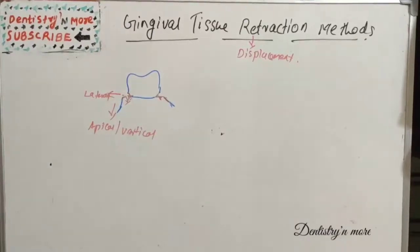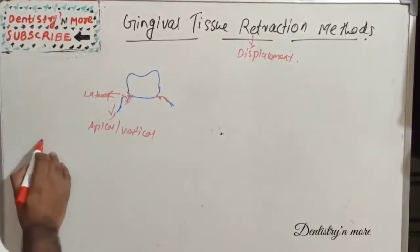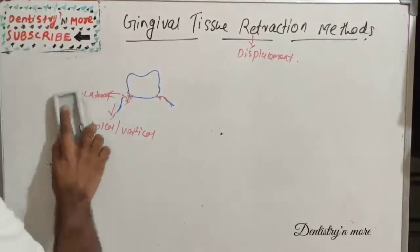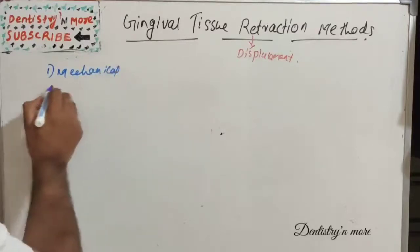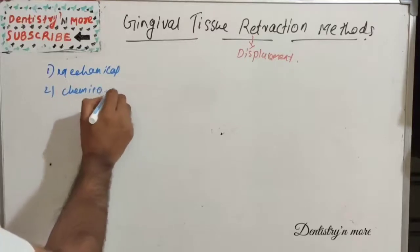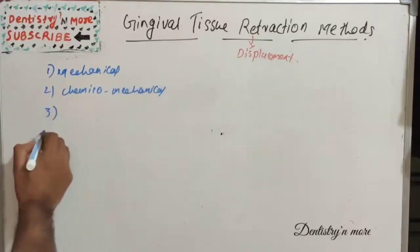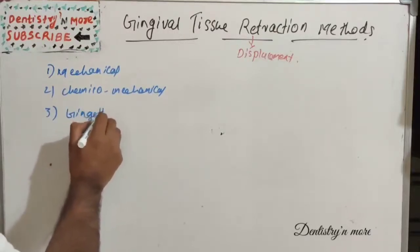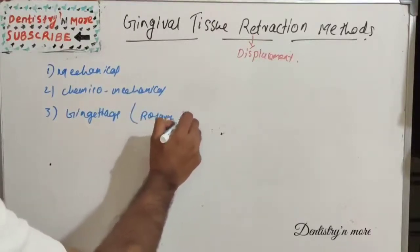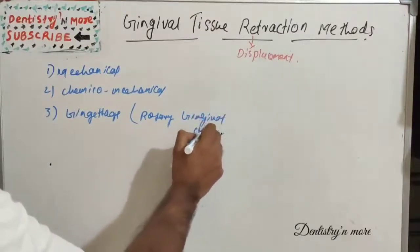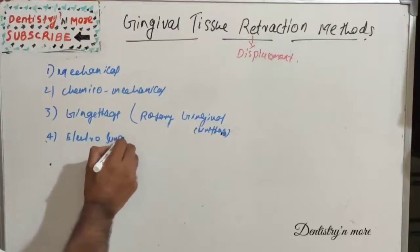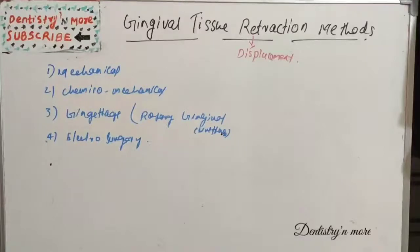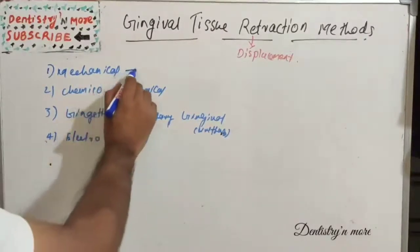We have four methods of gingival retraction. The first one is mechanical. The second is a combination of chemical-mechanical. The third is gingertach, which is the rotary gingival curettage. And we have electrosurgery. These are the four basic methods, and we may also have a combination of any of the above.